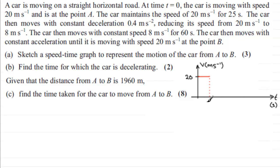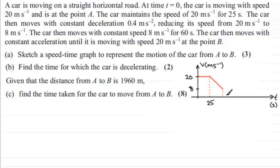Next, we're told that the car then moves with constant deceleration of 0.4 meters per second squared, reducing its speed from 20 meters per second to 8 meters per second. For that part, we draw a line going down to represent a speed of 8 meters per second, with a dotted line down to the time axis.